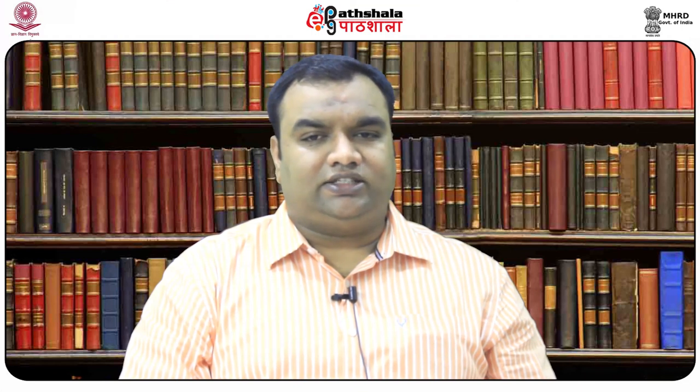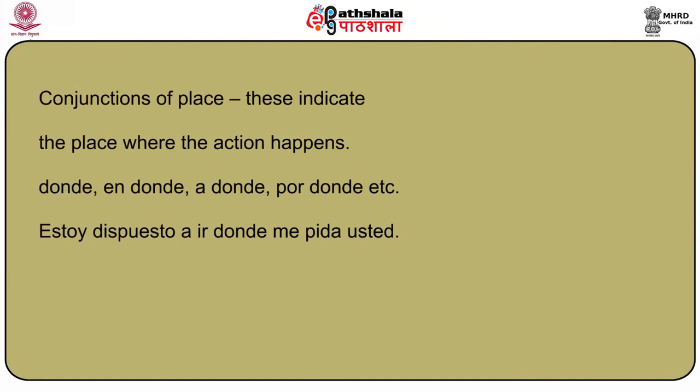Now let us take up the conjunciones subordinantes. As mentioned earlier, these are conjunctions that connect two clauses or sentences, the second being subordinate to the first or primary clause. First: conjunctions of place. These indicate the place where the action happens: dónde, en dónde, adónde, por dónde, etc. Example: Estoy dispuesto a ir dónde me pida usted — I am ready to go wherever you ask me to go.